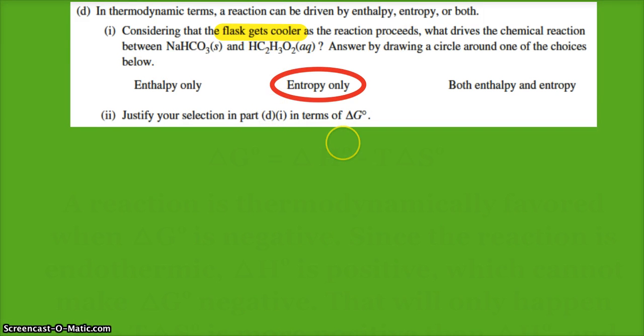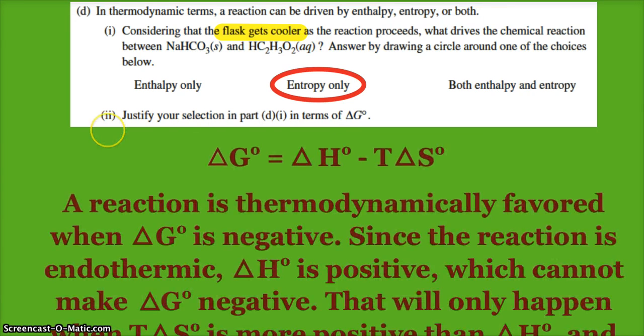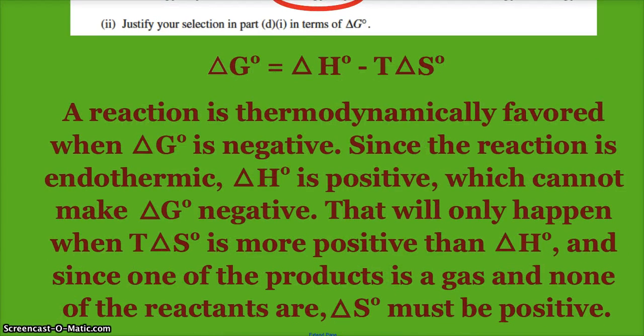So it says justify in terms of delta G. Of course, you've got your equation sheet, and you'll notice that delta G equals delta H minus T delta S. When delta G is negative, that is when we're thermodynamically favored. Since the reaction is endothermic, delta H is positive—that can't make delta G negative. That's only going to happen when our T delta S is more positive than delta H, and that has to happen because our delta S must be positive, which we see in this reaction with a gas being produced. So our entropy must be driving this reaction—our change in entropy.